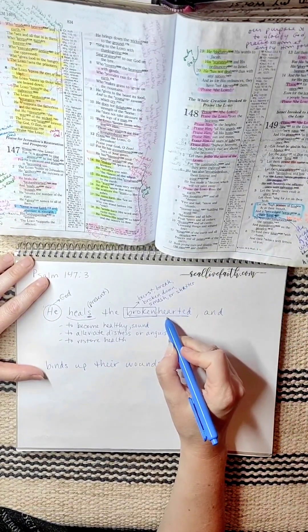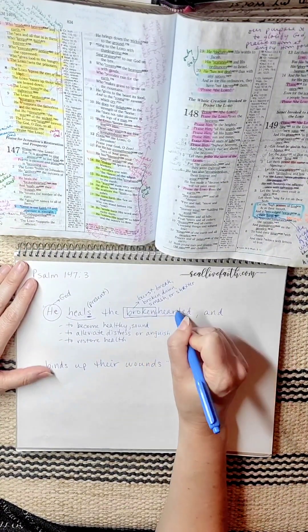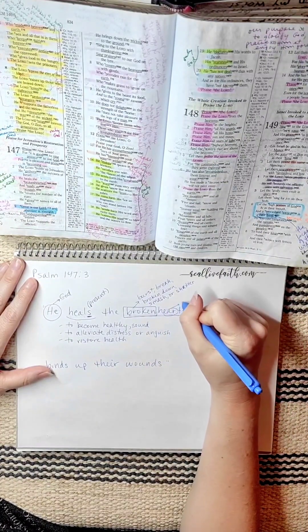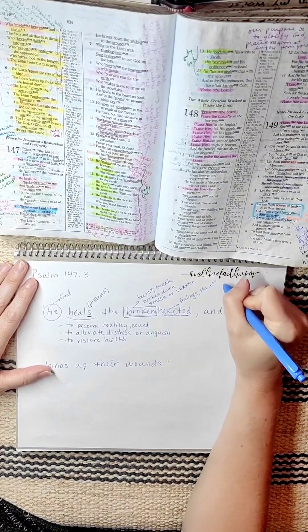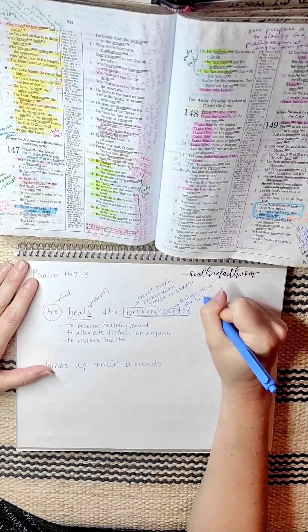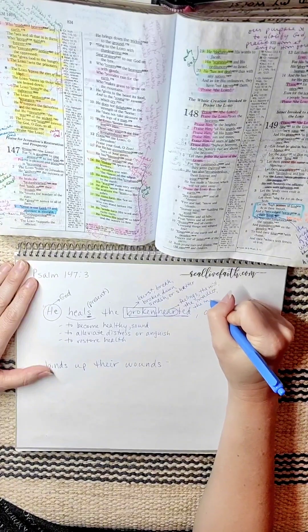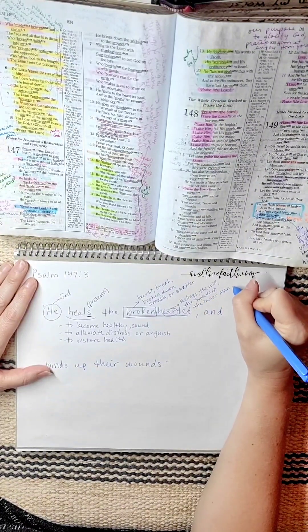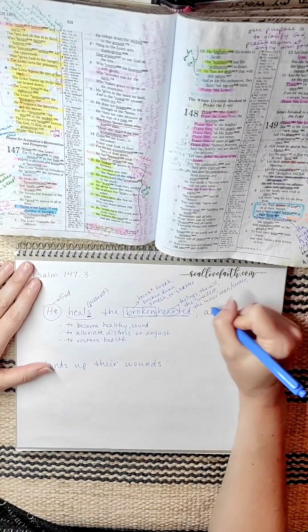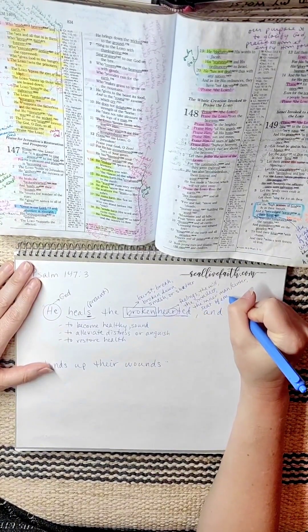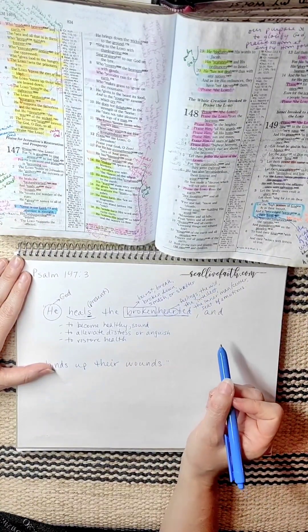And then this word hearted, if you look up the Strong's reference for this word hearted, it's going to base it off of that word heart, which it says applies to feelings, feelings, the will, the intellect, the inner man, or it might say center, like the center of your will, or the seat of your emotions. So those are all things applying to this word heart.